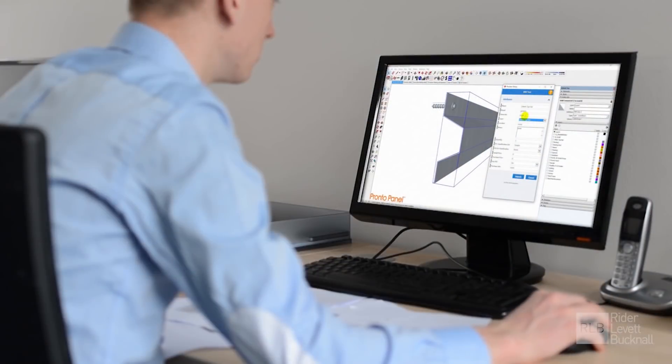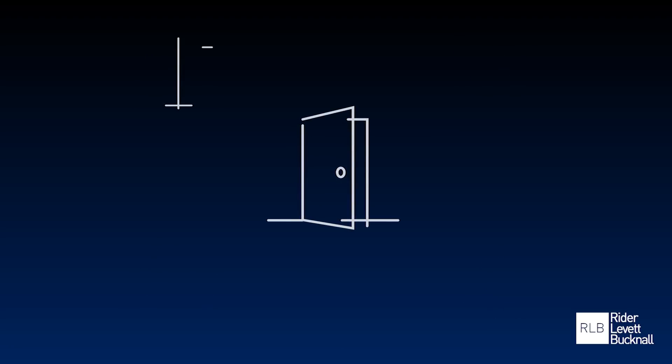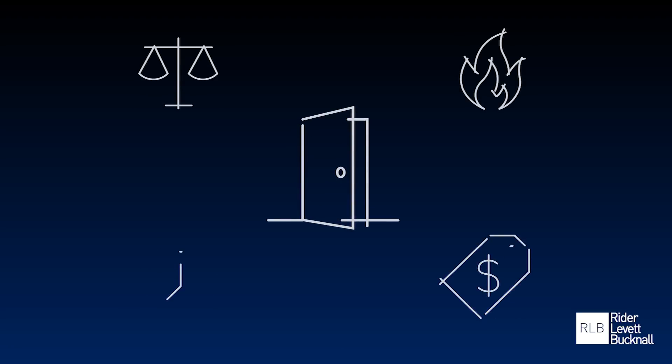A BIM file is different from a 3D drawing because it contains parametric data such as walls, windows, fixtures and doors, as well as attributes like their weight, density, fire rating, cost and time to install. This data within a BIM file is transferable to other systems.